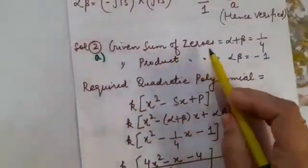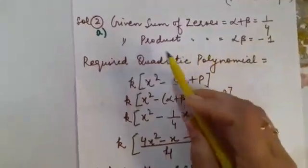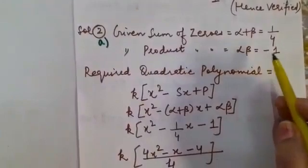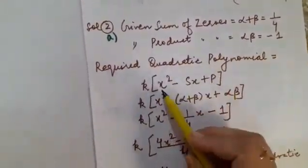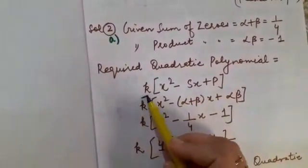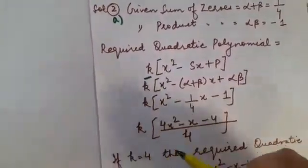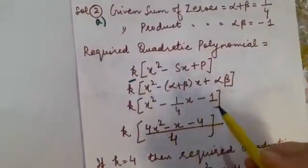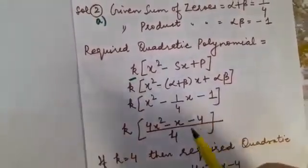So sum of the zeros is equal to alpha plus beta is equal to 1 by 4 given. Product of the zeros equal to alpha into beta that is minus 1 given. Required polynomial. That is x² minus sx plus p will be multiplied by any of the constant that is k. k you will keep on writing as it is because later on after solving this expression we will come to know what value can suit to k.